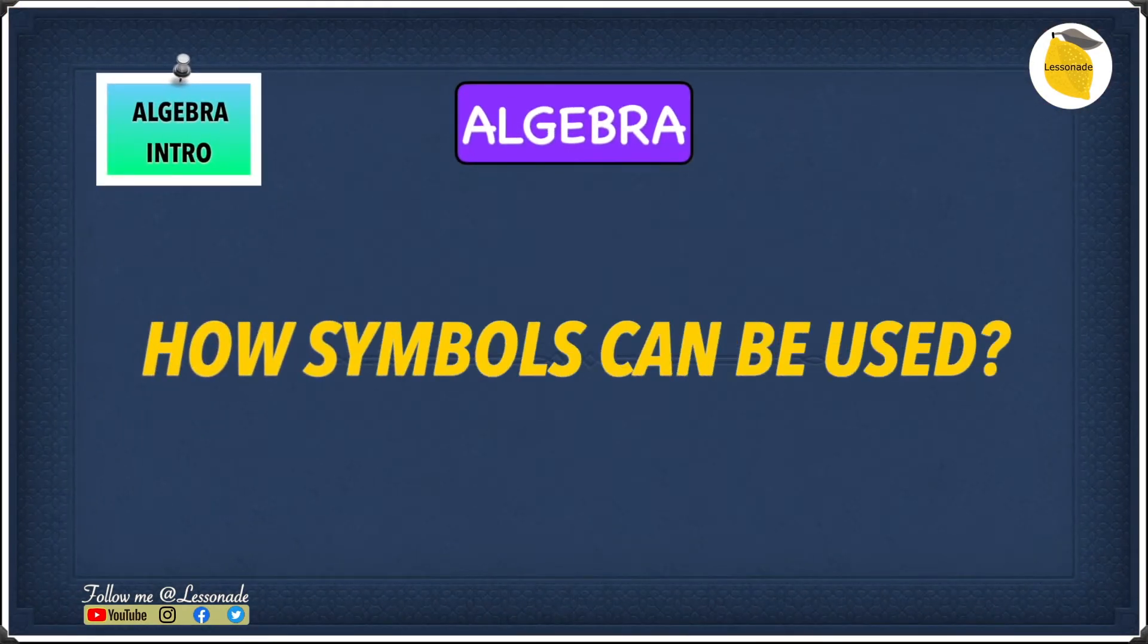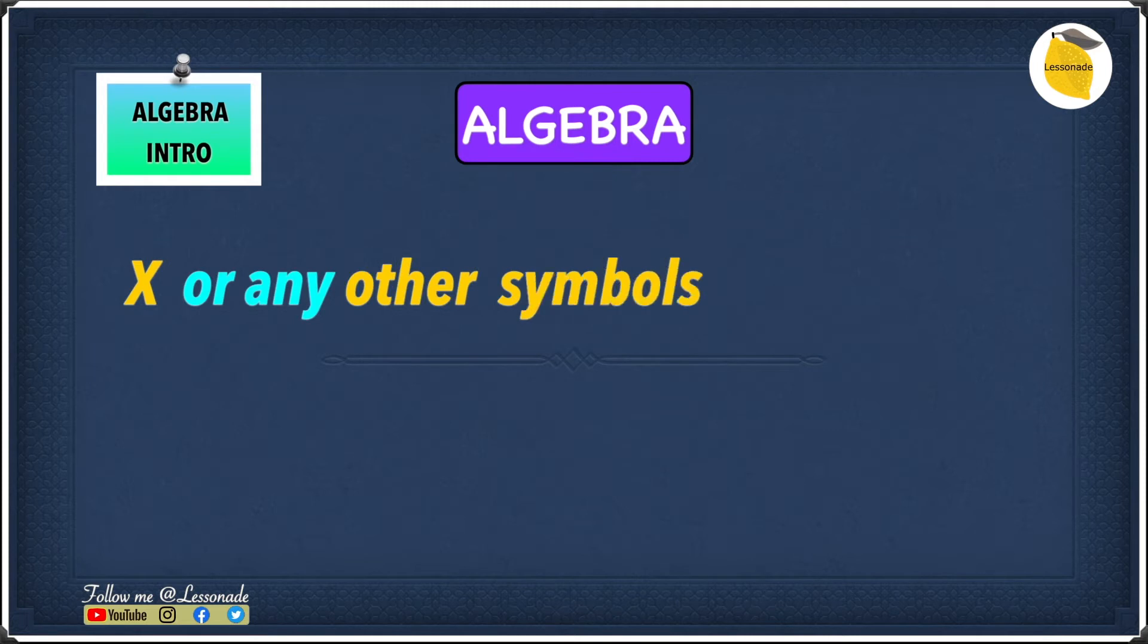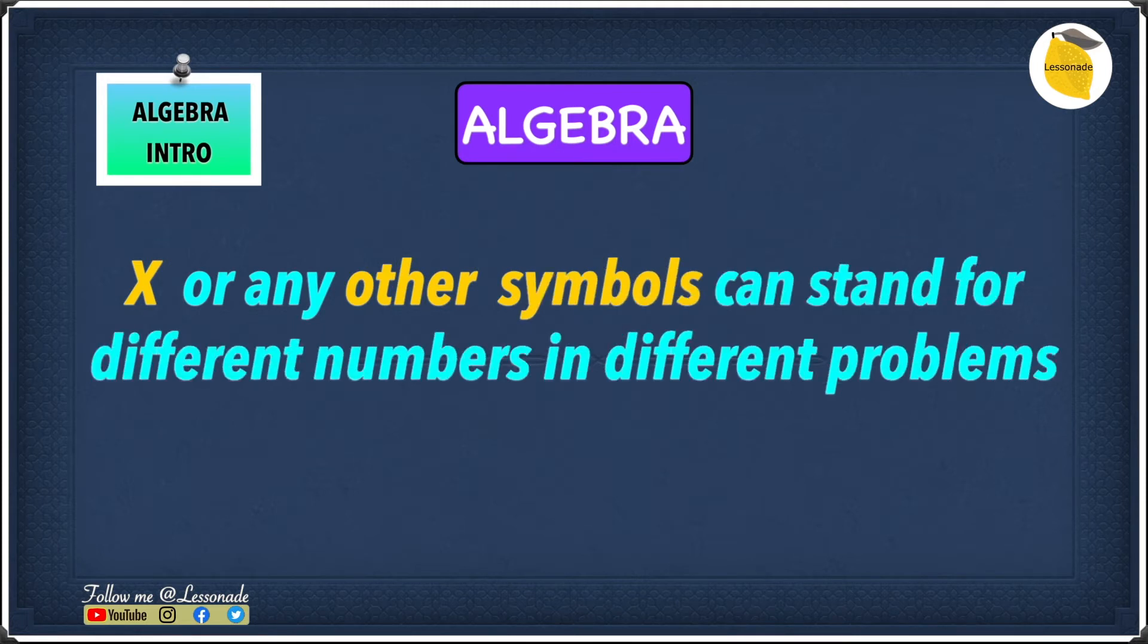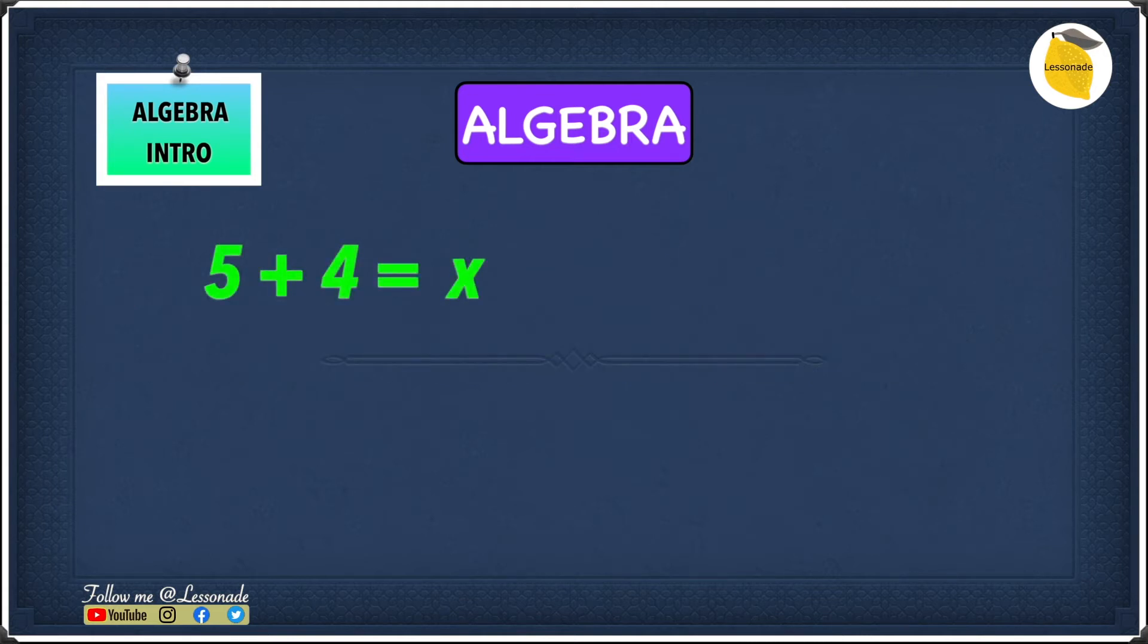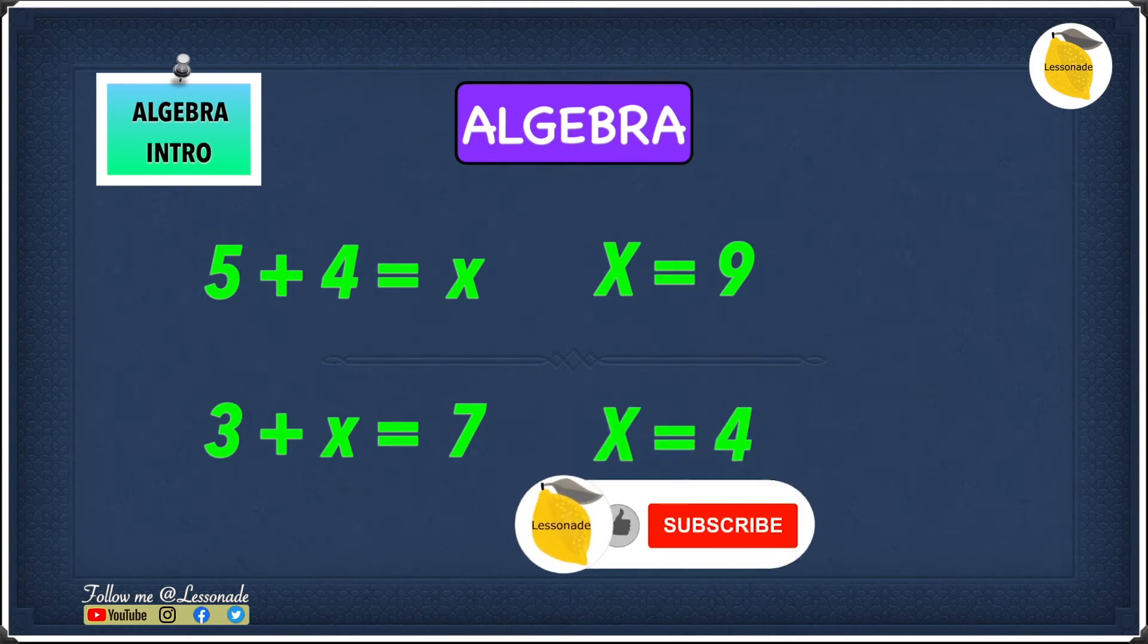Now, let's see how symbols can be used. x or any of the symbols can stand for different numbers in different problems and that's okay. For example, 5 plus 4 equals x. As we all know 5 plus 4 is going to be 9, and as we said before, when you're writing in algebra, you need to write it as x equals 9. Now let's have a look at another example which is 3 plus x equals 7, and we all know that x will be 4 because 3 plus 4 equals 7.